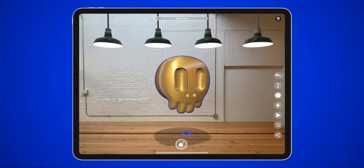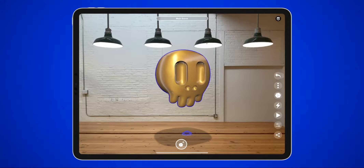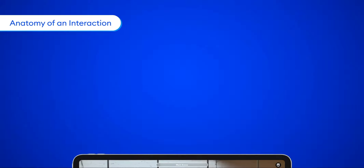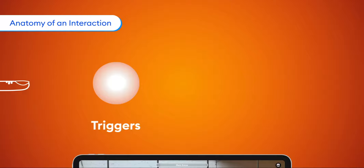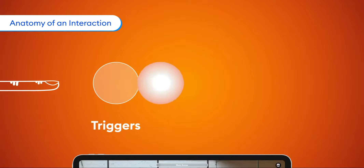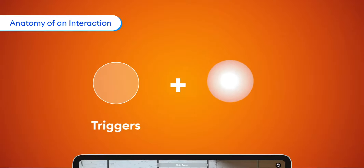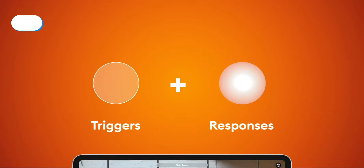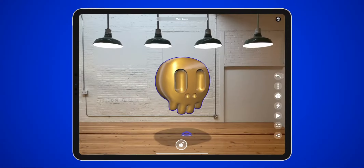Torch gets really fun when you start adding interactions to objects. But what are they? They're units of cause and effect — triggers that you attach to objects, combined with responses on one or more objects that happen when a trigger is fired.